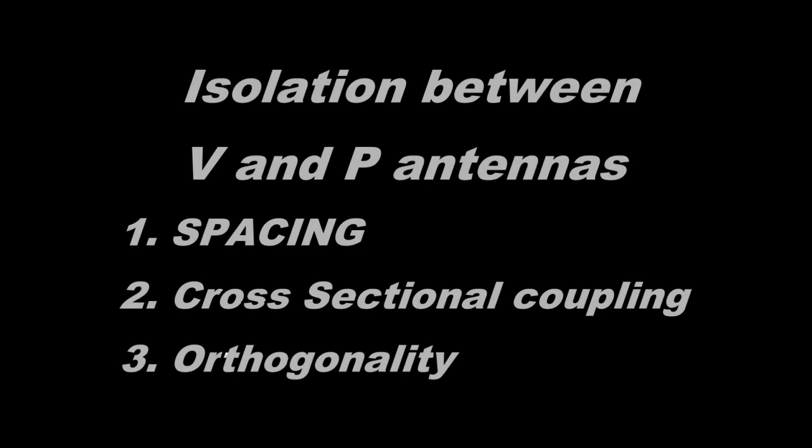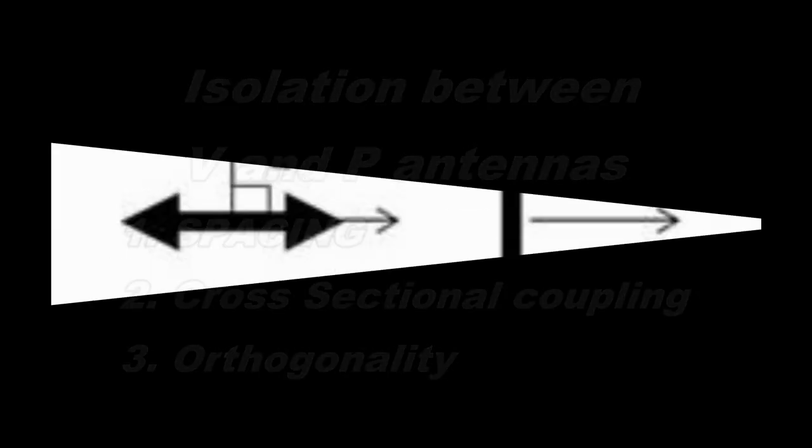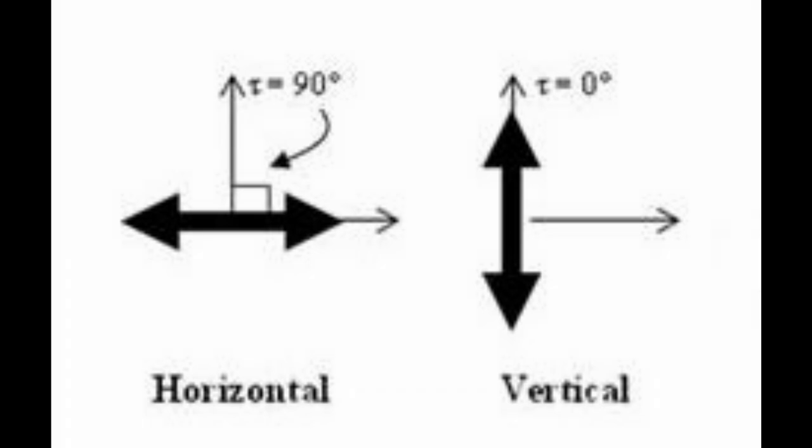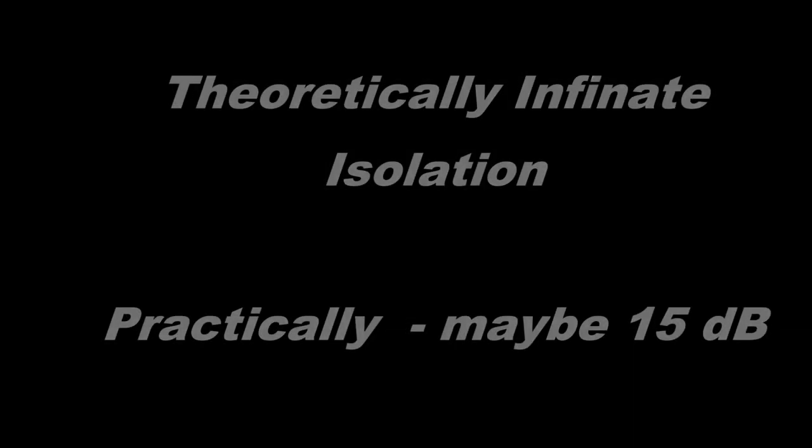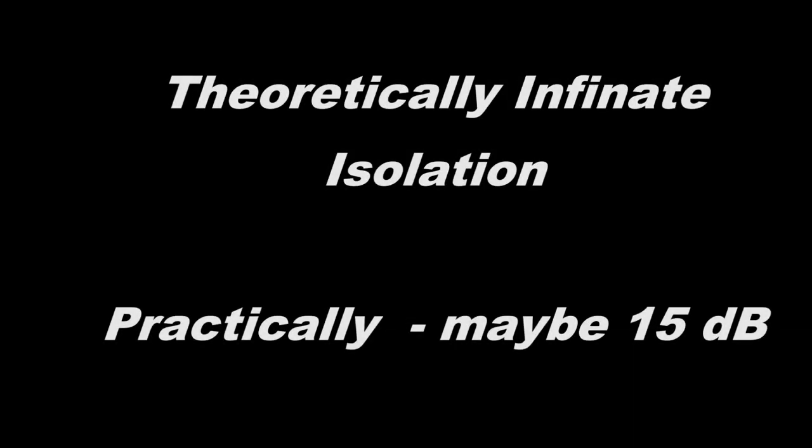And finally the third and probably most important is the principle of orthogonality. Orthogonality or perpendicularity in antennas means that the two antennas are basically at right angles to each other so that their electromagnetic fields do not interact. You can build up quite a bit of isolation using this technique and it's widely used in antennas.